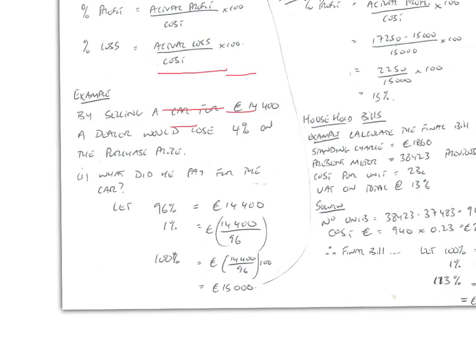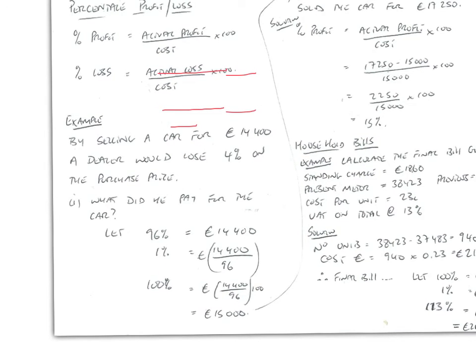Here's an example. By selling a car for 14,400, a dealer would lose 4% on the purchase price. What did he pay for the car? So, if he sells for 14,400, that must be equal to 96% of the price. So, we equate 96% to 14,400. So, 1% must be equal to 14,400 divided by 96. So, 100%, in other words, the full price of the car must be equal to 14,400 divided by 96 times 100, is 15,000.